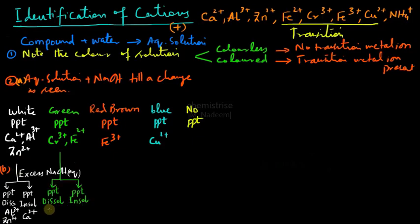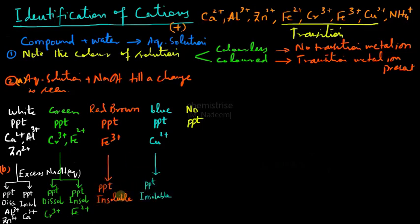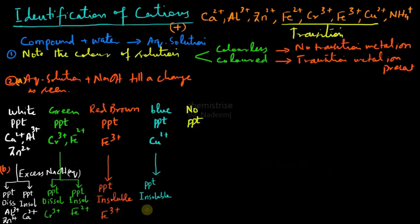For the green precipitate with excess NaOH, if the precipitate dissolves and we get a green-colored solution, chromium ions (Cr³⁺) are present. If the precipitate remains as it is, we have Fe²⁺. Both the red-brown precipitate and the blue precipitate remain insoluble in excess sodium hydroxide, confirming Fe³⁺ and Cu²⁺ respectively.